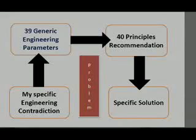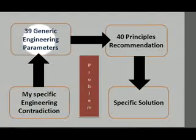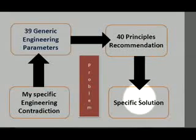To work with the matrix, we have to translate our specific parameters into one of the 39 general parameters that Altshuller used in his matrix. We look at the intersection of the improving parameter rows and worsening parameter columns. The intersection of these two will provide three to four standard principles used to solve that contradiction set. It's your job to think about those generic principles and apply them to your specific problem.